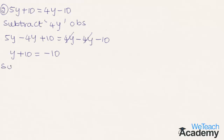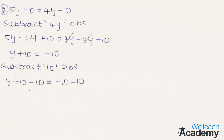To bring all constant terms to one side, let us subtract 10 from both sides. We get y plus 10 minus 10 equal to minus 10 minus 10. On the LHS, plus 10 and minus 10 cancel. We get y equal to minus 10 minus 10, which is minus 20. So y equals minus 20.